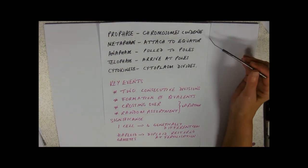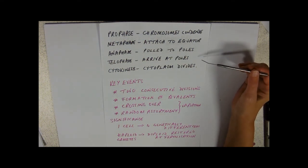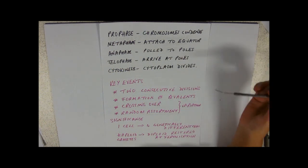They do what you expect them to do from your study of mitosis. In prophase, the chromosomes are going to condense. In metaphase, they're going to attach to the equator. In anaphase, they're pulled to the poles. In telophase, they arrive at the poles, and that's followed by cytokinesis and the cytoplasm divides.